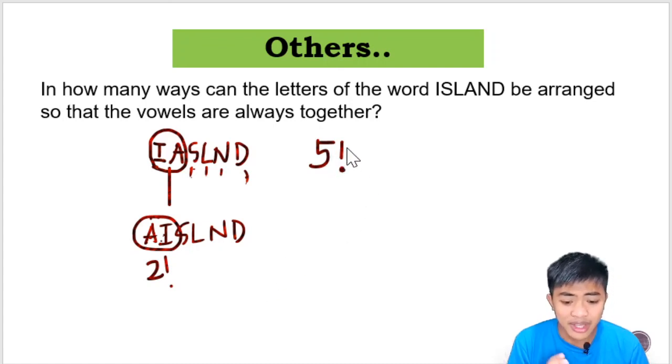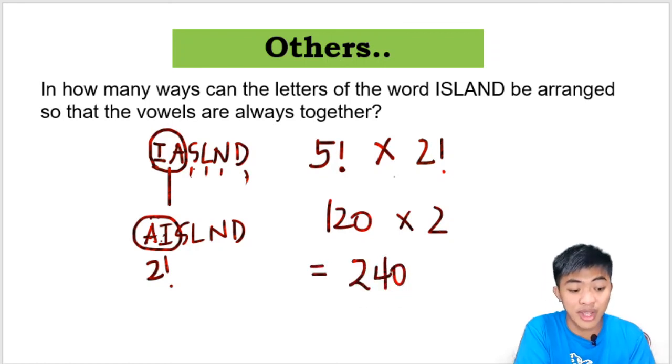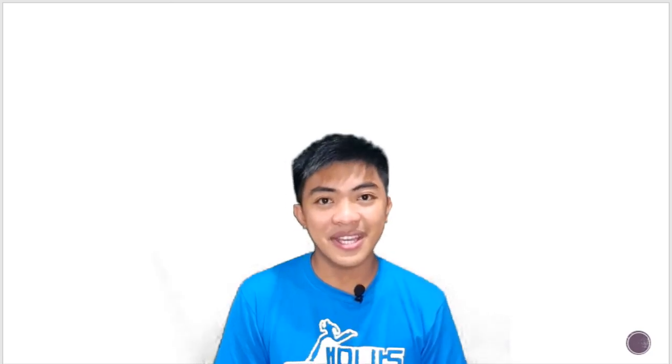We have here 5 factorial, yun yung kung lahat-lahat sila. Pero we also consider yung arrangement nung dalawang vowels kasi pwede silang magpalit. So that will become 2 factorial. 5 factorial is 120 times 2 factorial, which is 2, and so the answer here is 240. There are 240 ways in which we can arrange the letters of the word ISLAND and that the vowels there are always together. Yun guys, ang lesson nothing for today. I hope it helped you kahit konti lang. Don't forget to subscribe and share this video to your classmates. See you guys in the next video. Bye.